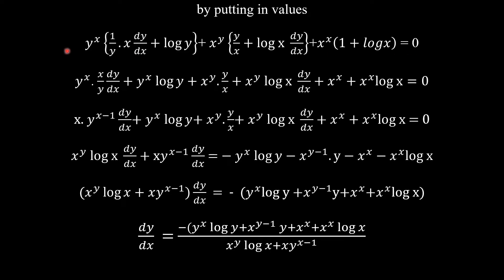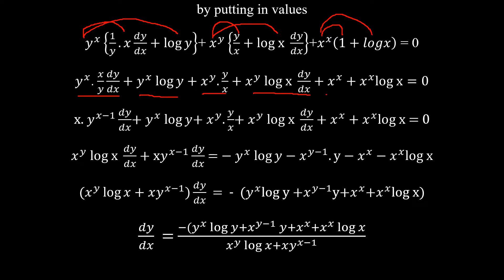Substituting the derivatives: du/dx + dt/dx + dm/dx = 0. Now opening the brackets: y^x · (x/y)·(dy/dx) + y^x·log(y) + x^y·(y/x) + x^y·log(x)·(dy/dx) + x^x + x^x·log(x) = 0.